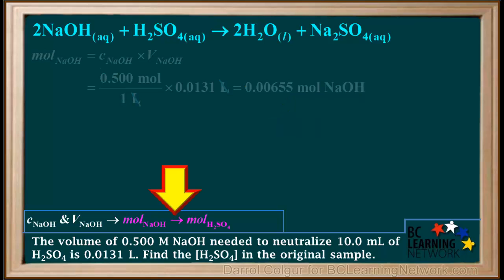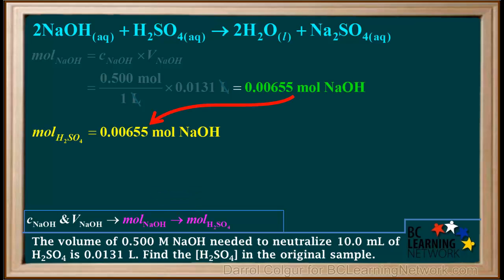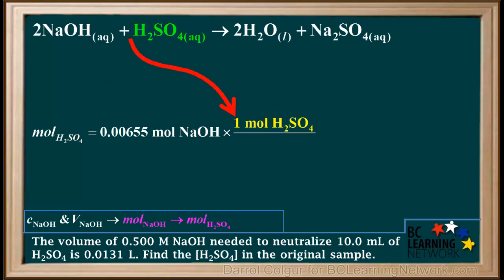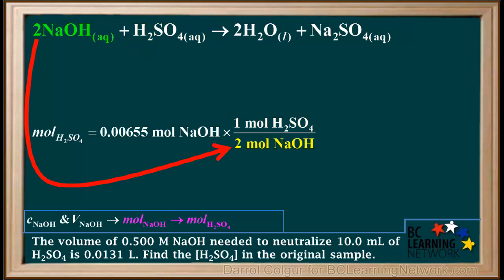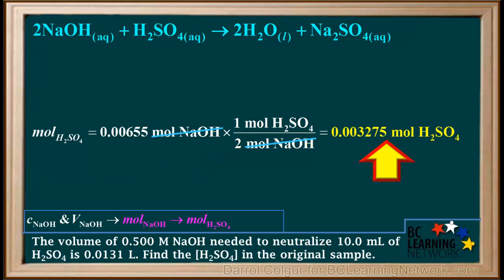The next step is to calculate the moles of H₂SO₄ neutralized by 0.00655 moles of NaOH. Using the coefficient ratio from the balanced equation, we take 0.00655 moles of NaOH times the ratio of 1 mole H₂SO₄ over 2 moles NaOH, which gives 0.003275 moles of H₂SO₄. We won't round to the correct number of significant figures until the end of the last calculation.